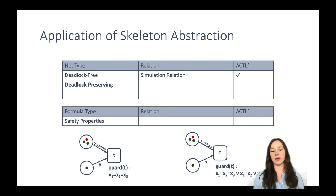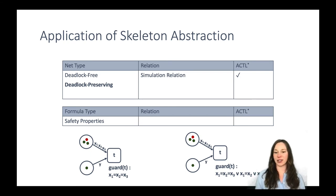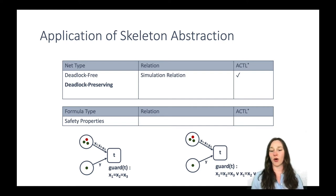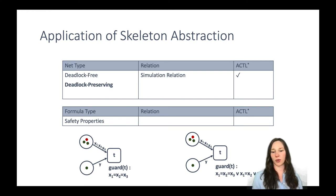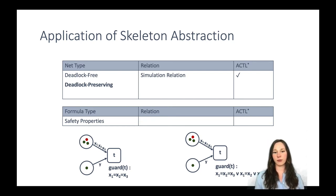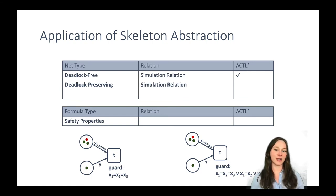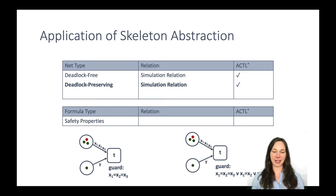A positive example is the small colored net on the right side, where I changed the guard to be more permissive — it allows the transition to fire if all three colors are the same, if two are the same, or if just one token matches. If we can guarantee that we only have deadlocks which are preserved, we can guarantee the simulation relation and safely transfer our ACTL* properties.